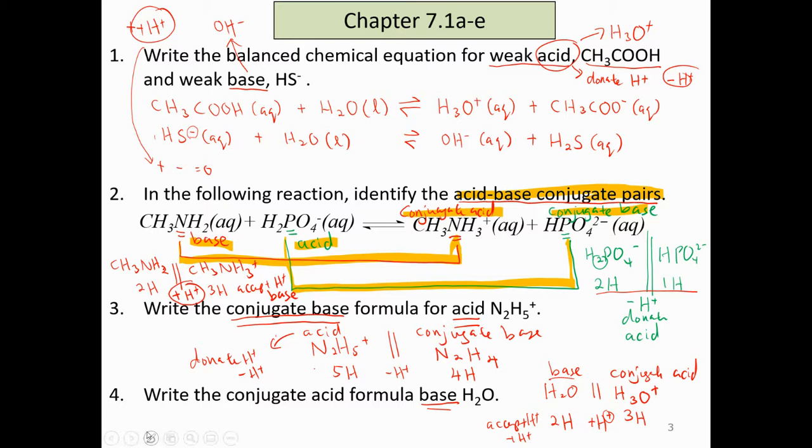So remember, if one is acid, another one must be conjugate base. An acid donates proton. A base accepts proton. And then to write the balanced chemical equation for dissociation of weak acid or weak base, remember you must write all the states and don't forget the reversible arrow because it is not completely dissociated.